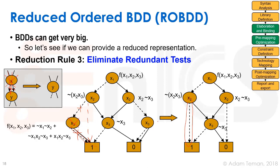We were able to skip several such nodes, reducing our BDD to only four internal nodes and two output nodes, instead of the large tree we had before. That's on a small BDD, but with many variables, the reduction can be very, very efficient.